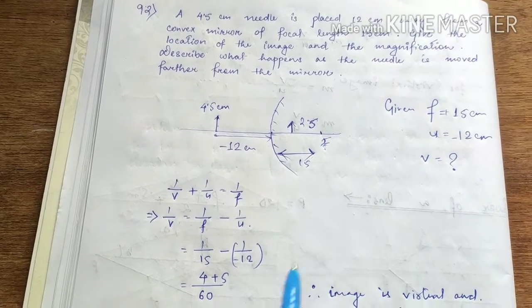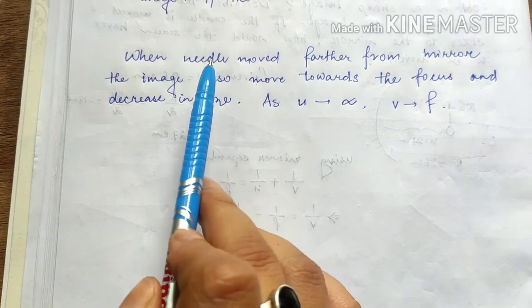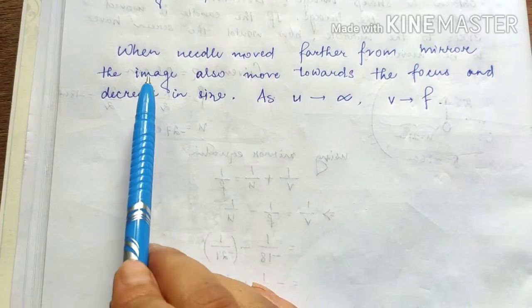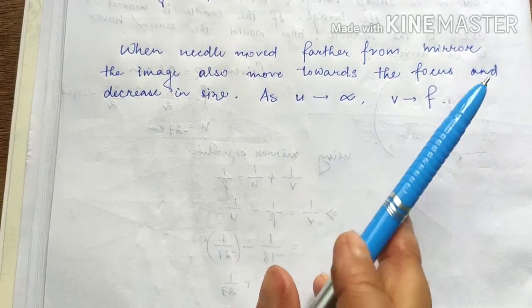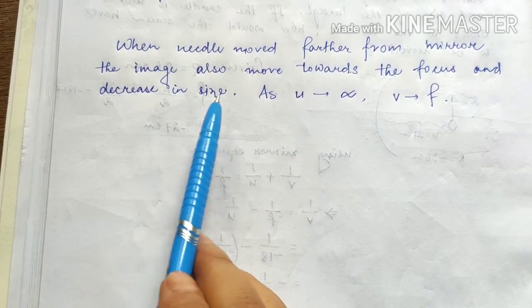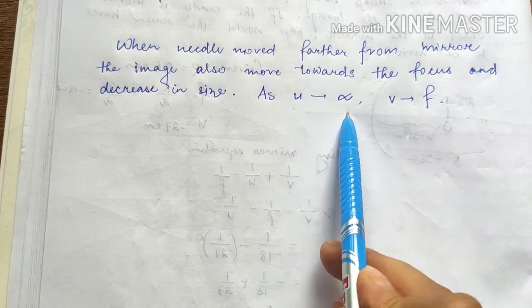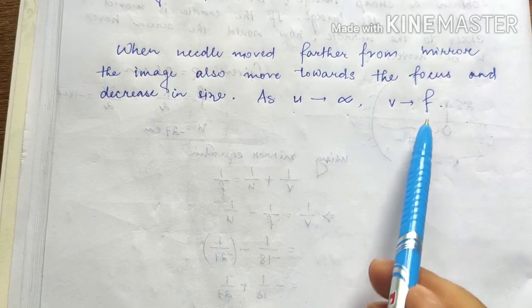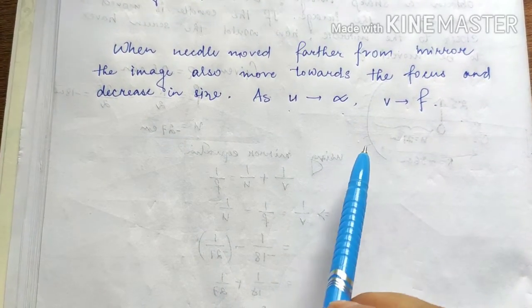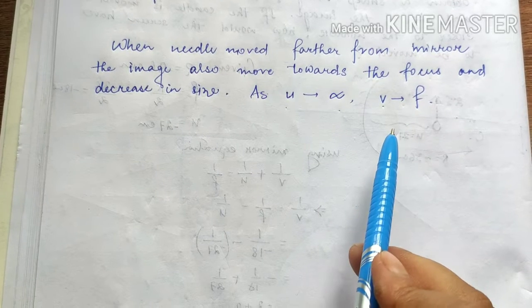When the needle is moved further from the mirror, the image also moves towards the focus and decreases in size as it approaches infinity — V tends to F.